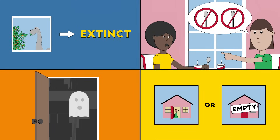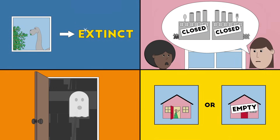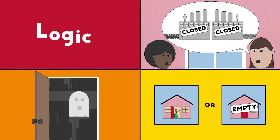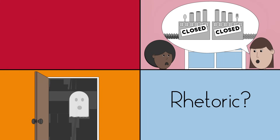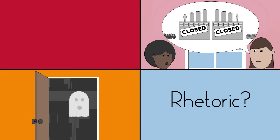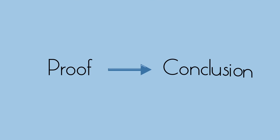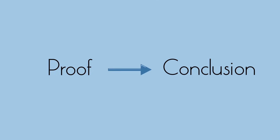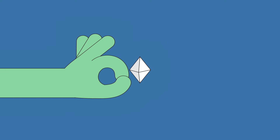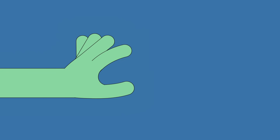Most logical fallacies can be spotted by thinking critically. Make sure to ask questions. Is logic at work here, or is it simply rhetoric? Does their proof actually lead to the conclusion they're proposing? By applying critical thinking, you'll be able to detect logical fallacies in the world around you and prevent yourself from using them as well.